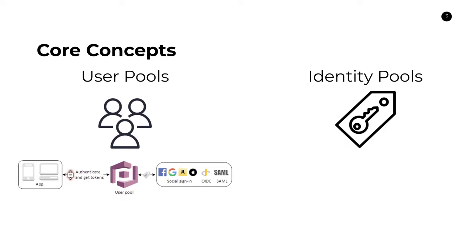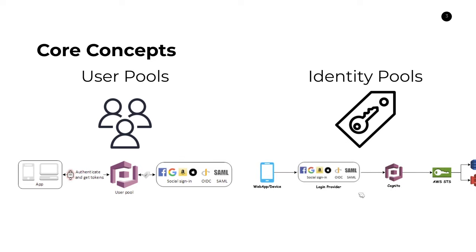User pools are all about user management — registration, sign up, log in, and all that. Identity pools, on the other hand, are useful for providing short-term access to AWS services. You have a web app or application where a user needs to authenticate with a login provider — Facebook, Google, Amazon, Apple, or directly with Cognito. After the user logs in, they get access to a credential set or IAM role that has access to certain AWS services, and those credentials are returned to the user so they can interact with AWS directly in subsequent calls. You can also assign guest roles for users who aren't signed in.